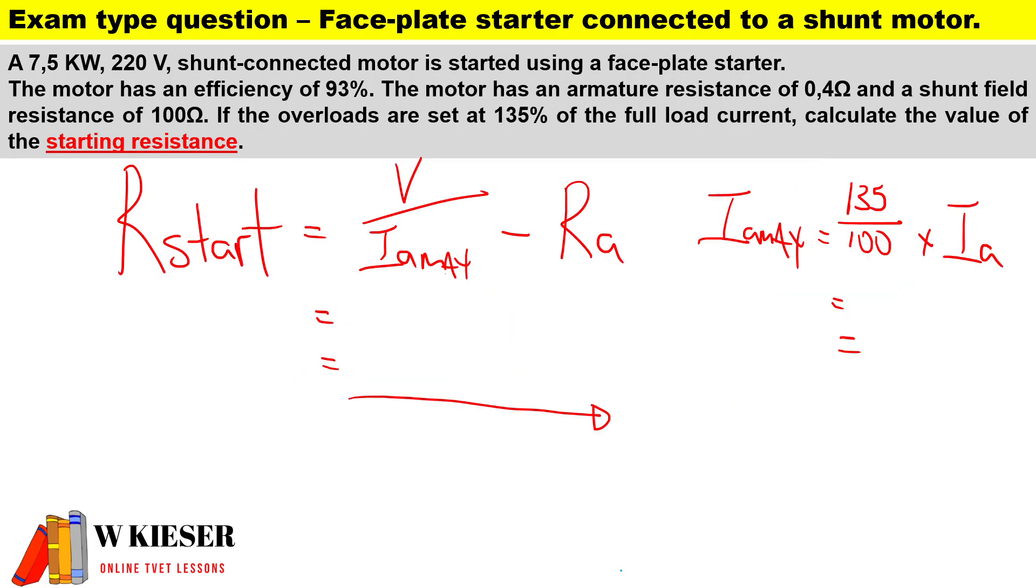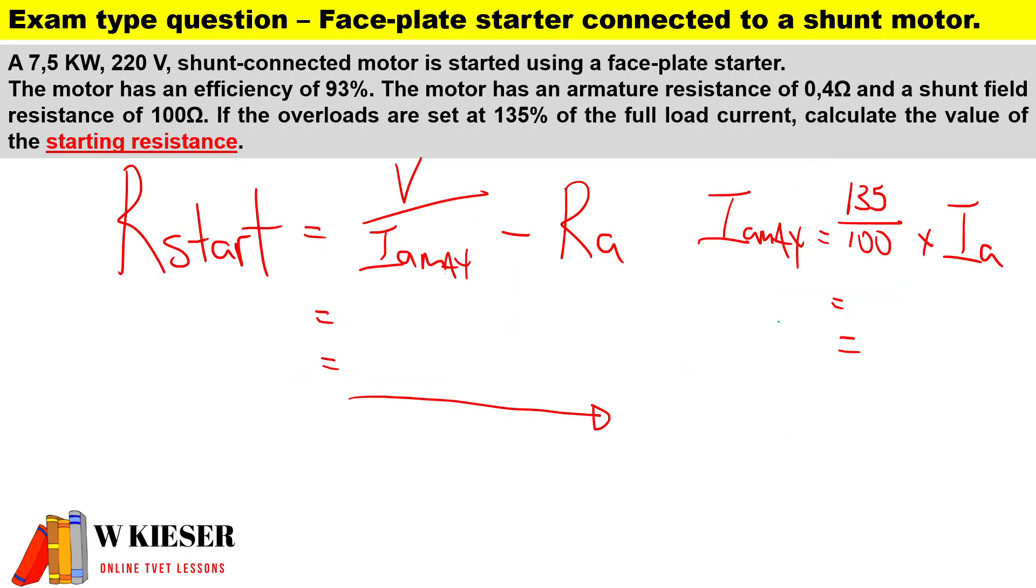Therefore our armature current under normal conditions will be 34.455A. Now to work out the maximum amount of armature current this machine will experience: 135 divided by 100 times our normal armature current of 34.455A, therefore I_a_max is 46.514A.